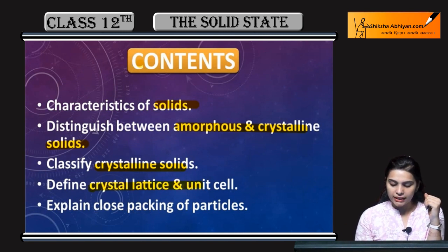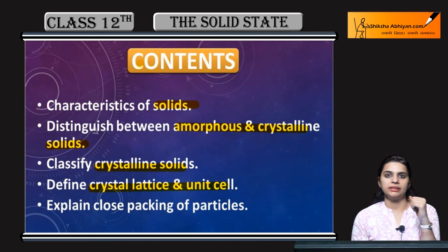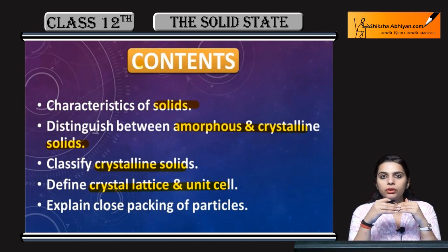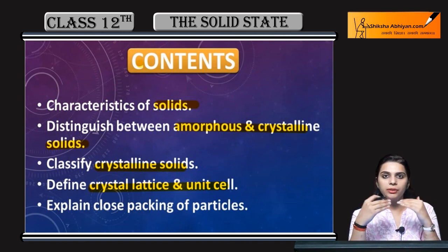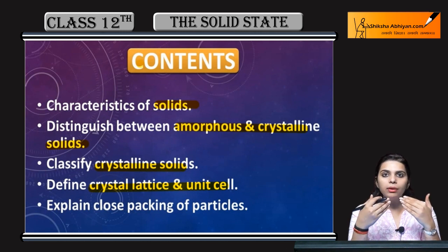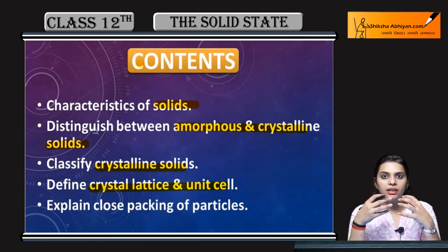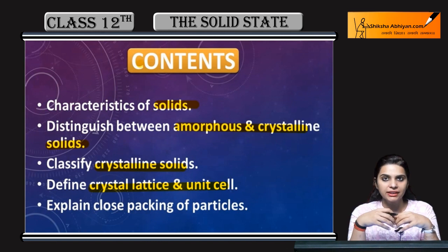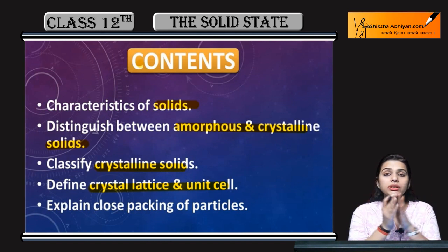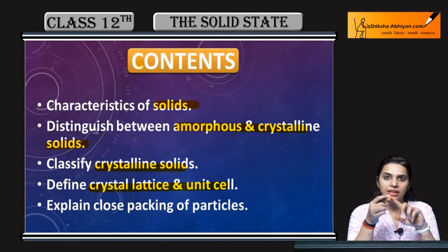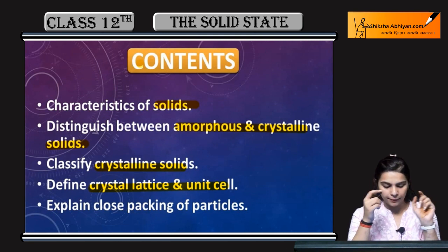Next, we will define crystal lattice and unit cell. After the first three points covering the physical properties of solids, we will now come to the internal structure. How is a solid internally structured, and what is happening inside it? So first of all, what is a crystal lattice and what is a unit cell?